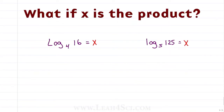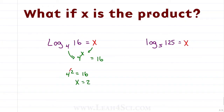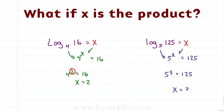For problems where x is given as the exponent with a product of 16, ask yourself: 4 raised to the x power equals what? You should recognize that 4 times 4, or 4 squared, equals 16, therefore x equals 2. Similarly, 5 raised to the x power equals 125 — 5 times 5 is 25, and 25 times 5 is 125, so 5 to the third equals 125, giving us x equals 3.